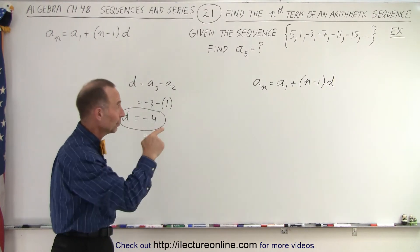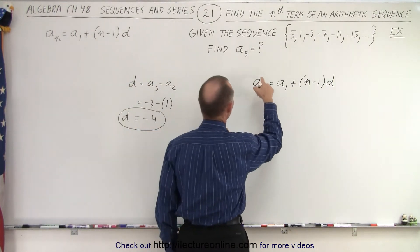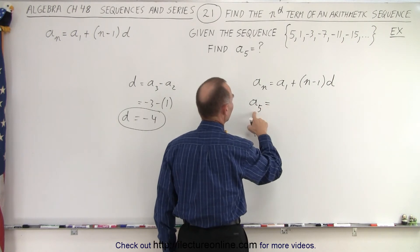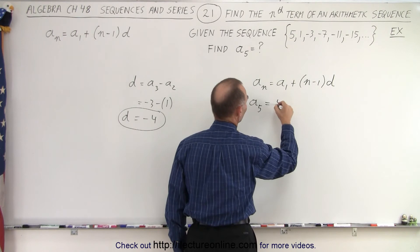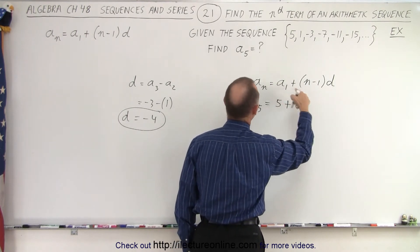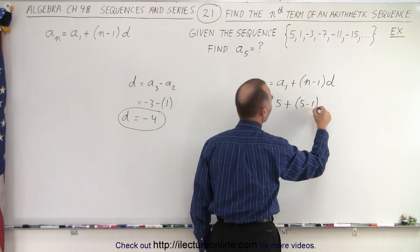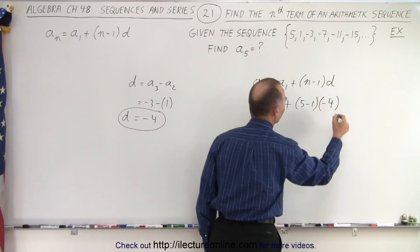So now we're ready to plug in what we have right here. a sub n now becomes a sub 5. We want the fifth term in that particular sequence. a sub 1 is the first term which is 5 plus n. n would be the fifth term minus 1 times the common difference of minus 4.